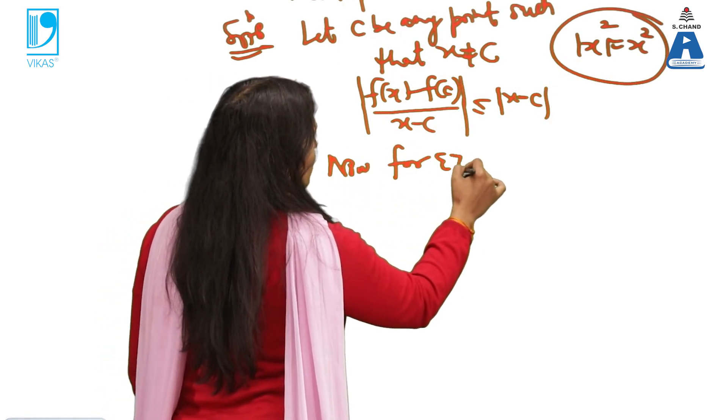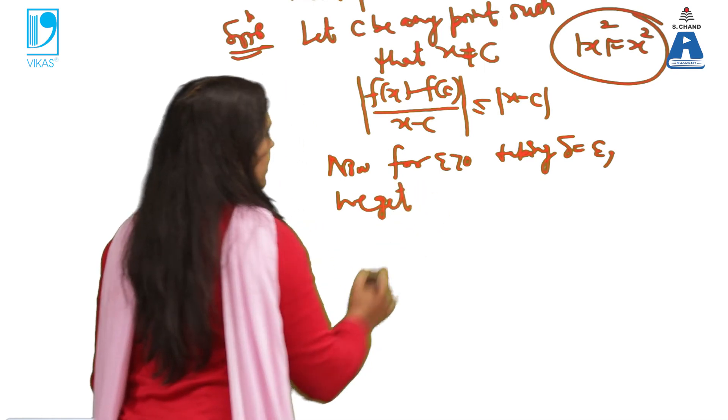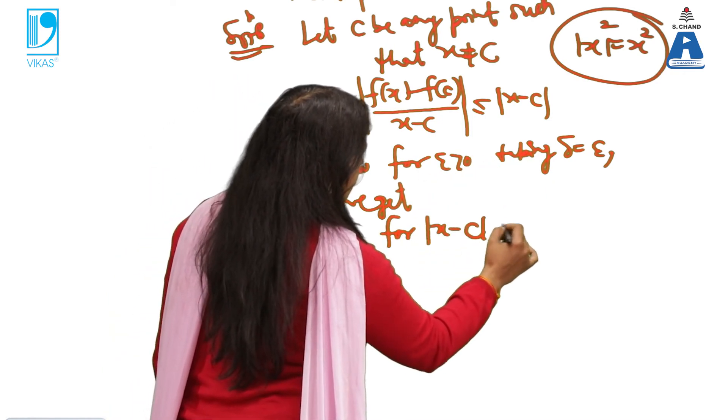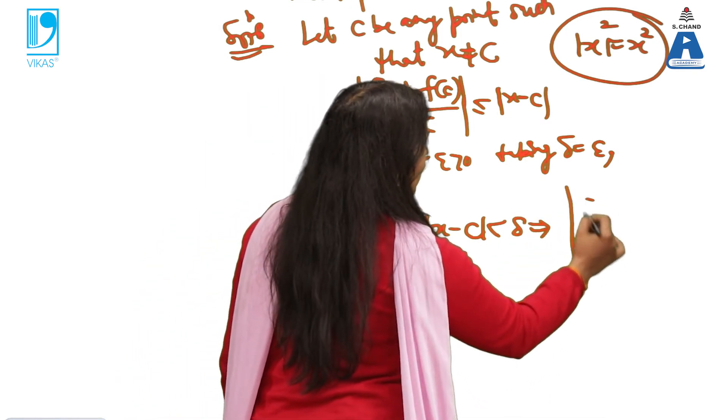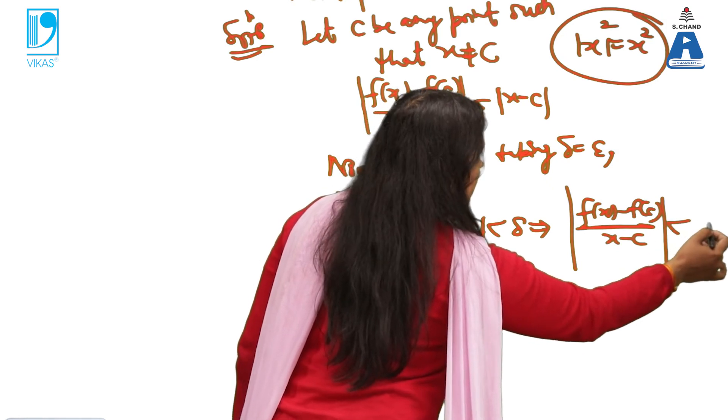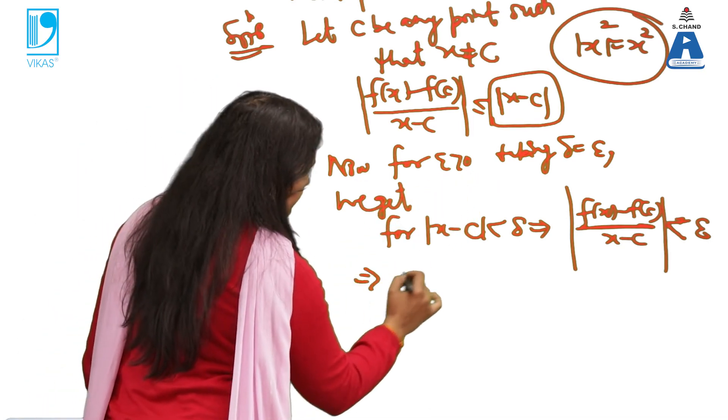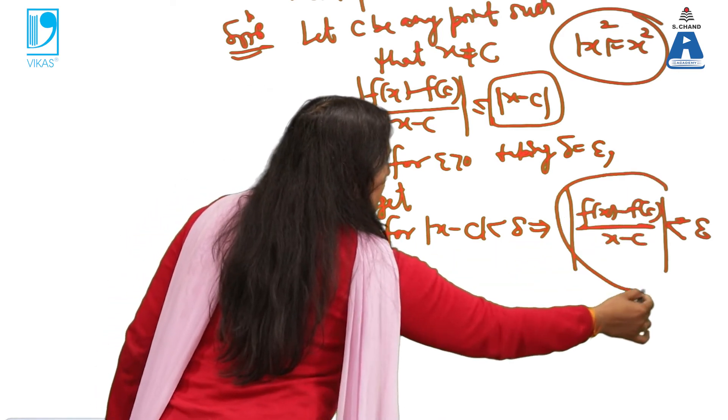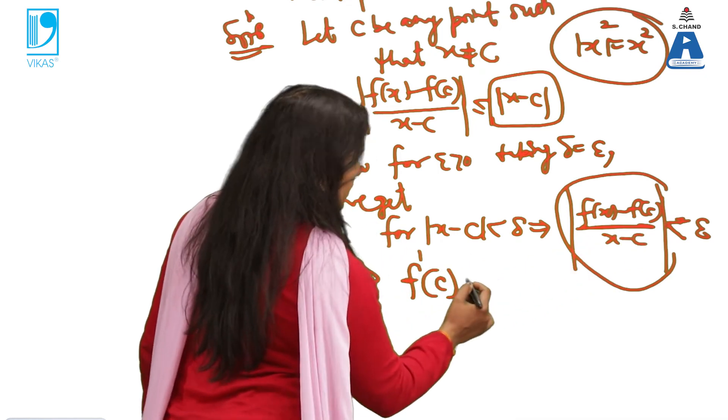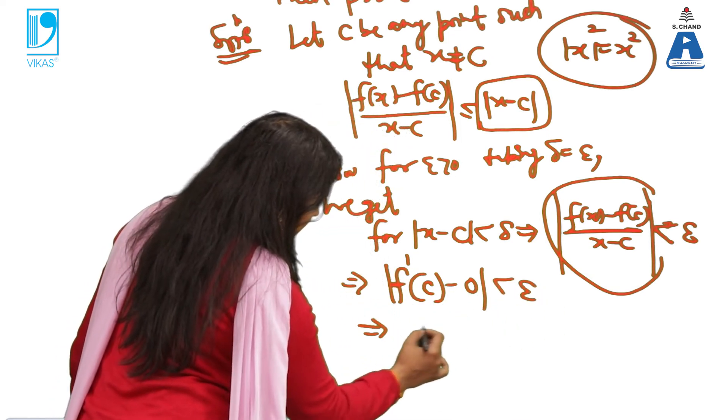Now, for ε > 0 taking δ = ε, we get that. Obviously, I am applying the epsilon-delta definition of derivative. This we get for |x - c| < δ implies |[f(x) - f(c)]/(x - c)| < ε because if this is less than delta then that thing will be less than epsilon. It means finally what exactly it is? This definition is basically f'(c).